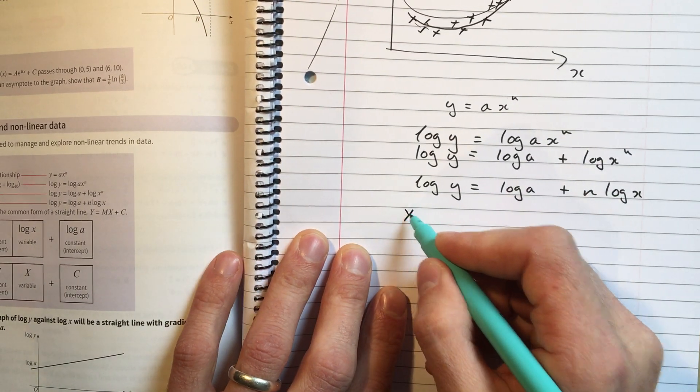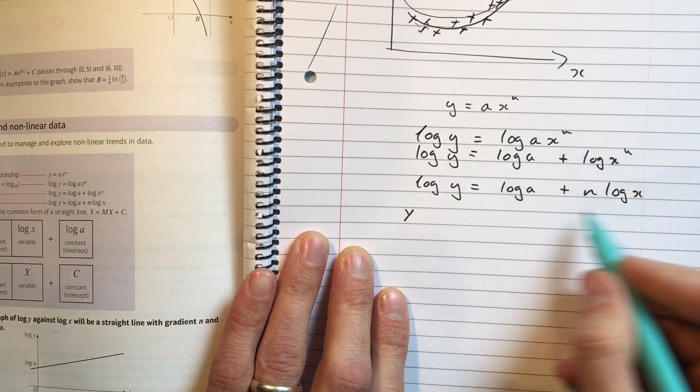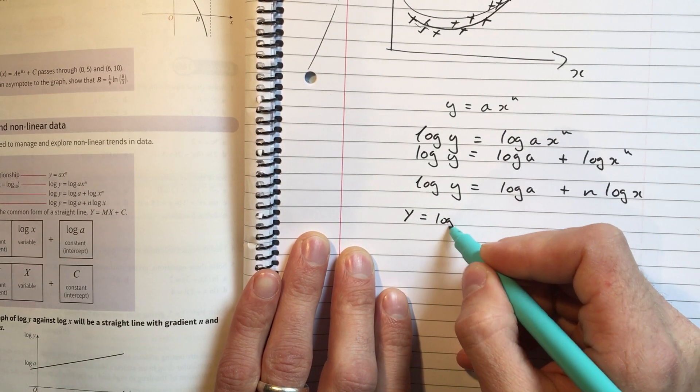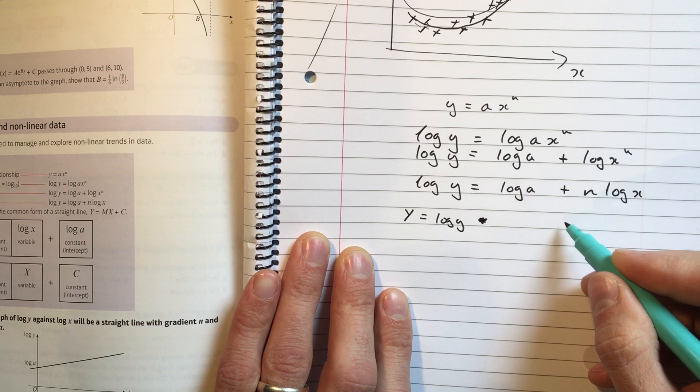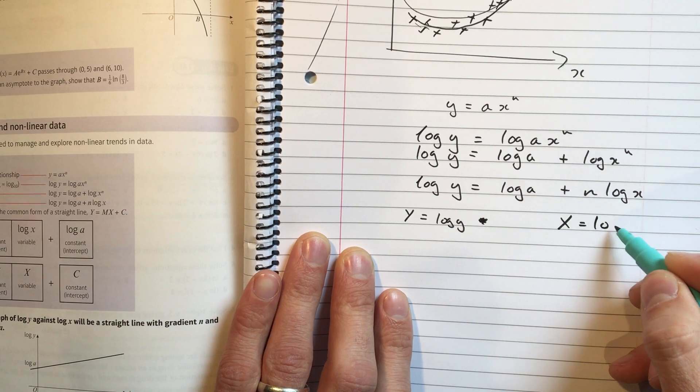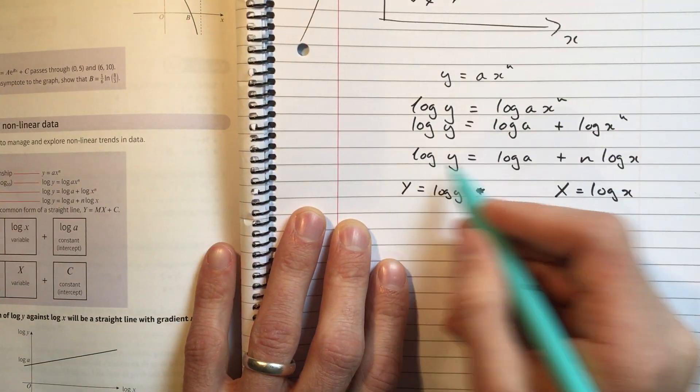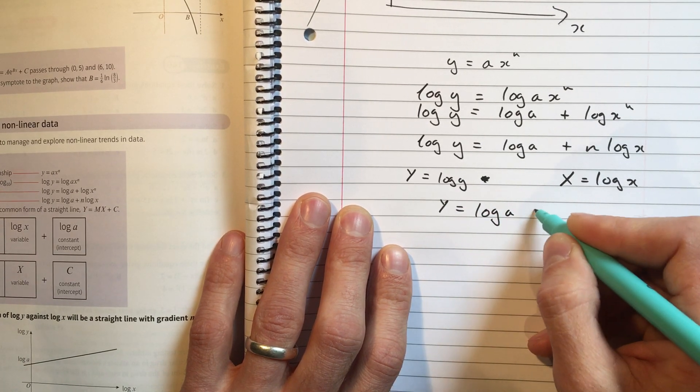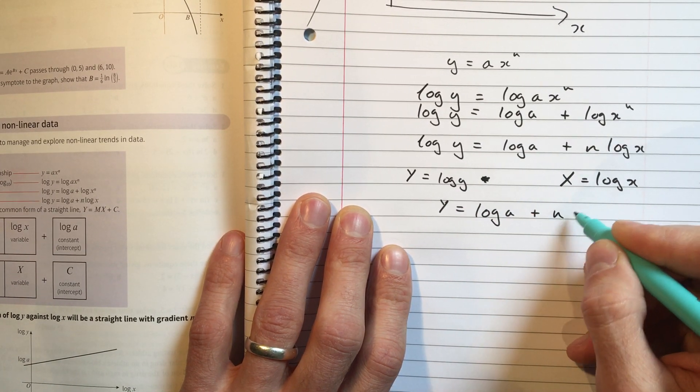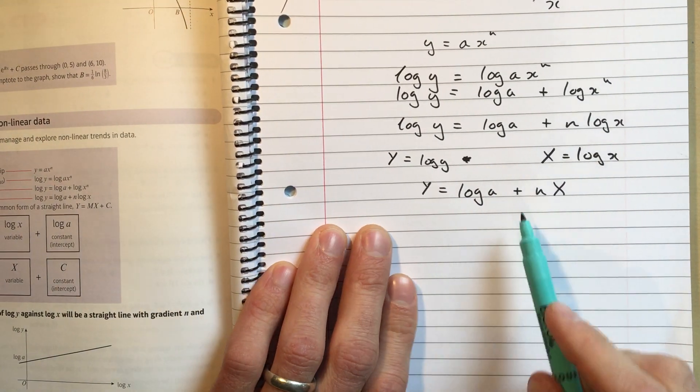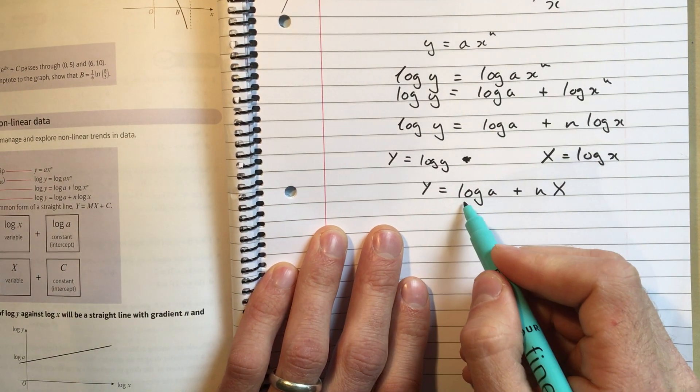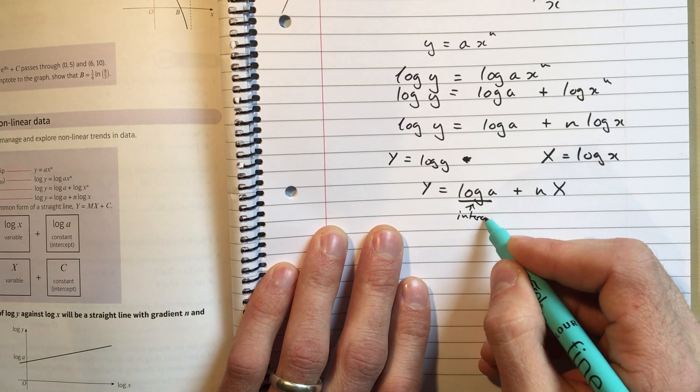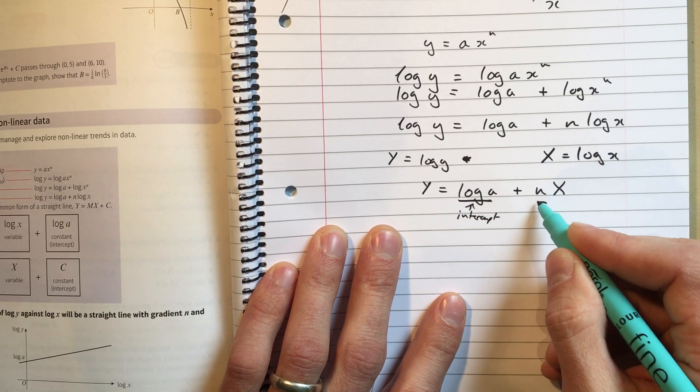So I get log y equals log of a plus n times log of x. And now I'm going to say, instead of making this look fiddly, I'll change log y into a capital Y, and I'll change log x into a capital X. So this equation becomes Y equals log a plus n times X. And if you look at that, remember log a is just a constant. So that is the intercept, and that is the gradient.